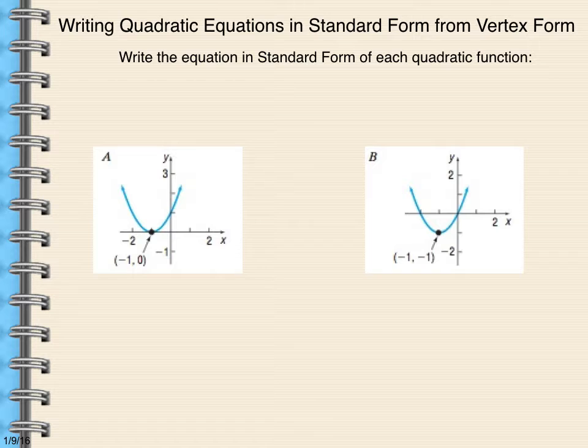Recall that the standard form of a quadratic function is ax squared plus bx plus c. a gives us some information about the curve. We call this the leading coefficient. It tells us how the curve opens. If a is positive, it opens up. If a is negative, it opens down. c, the constant term, will actually be our y-intercept when the function is written in standard form.